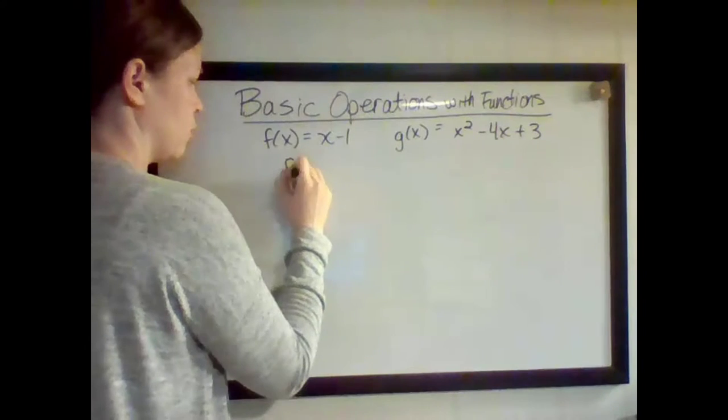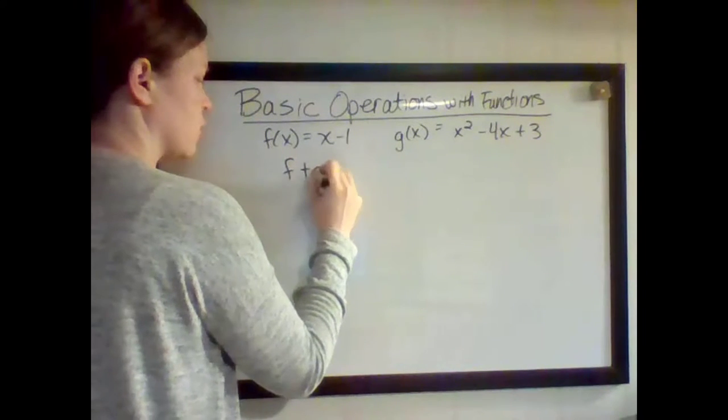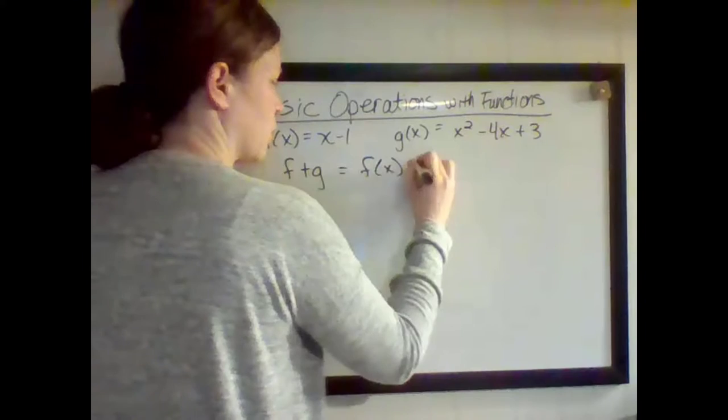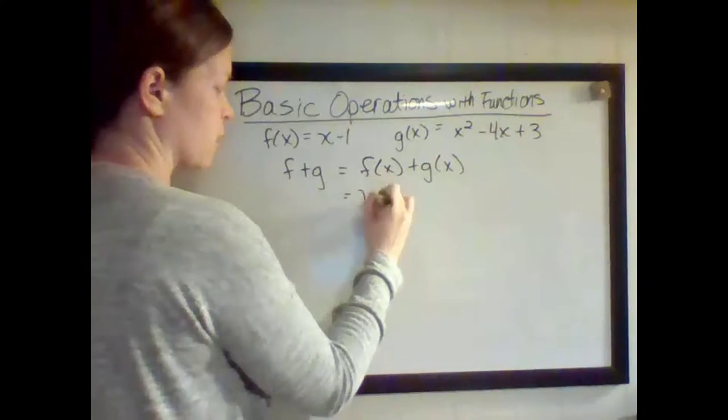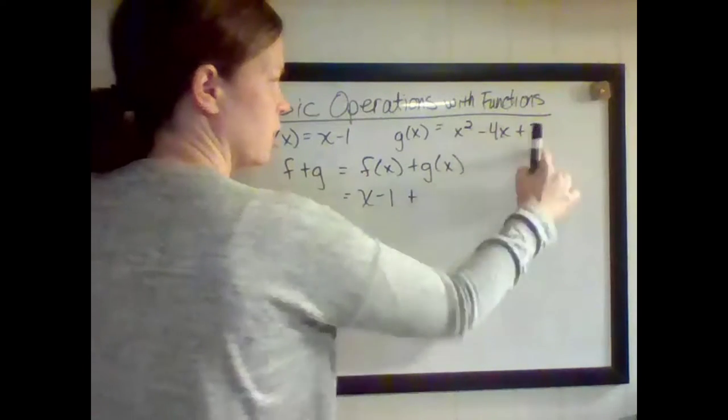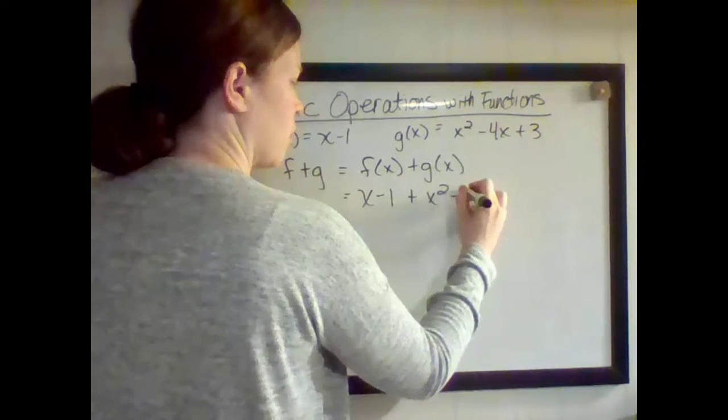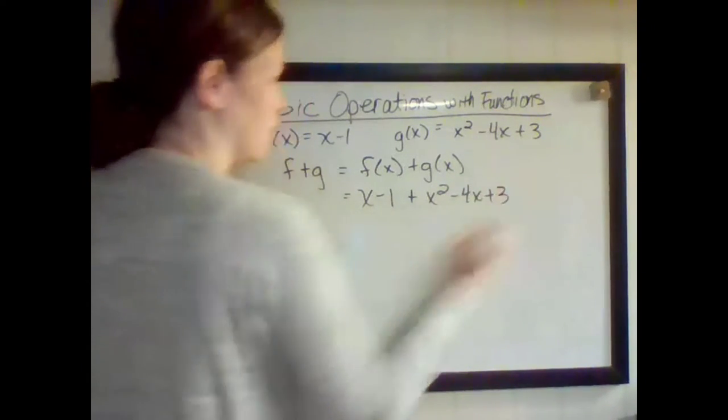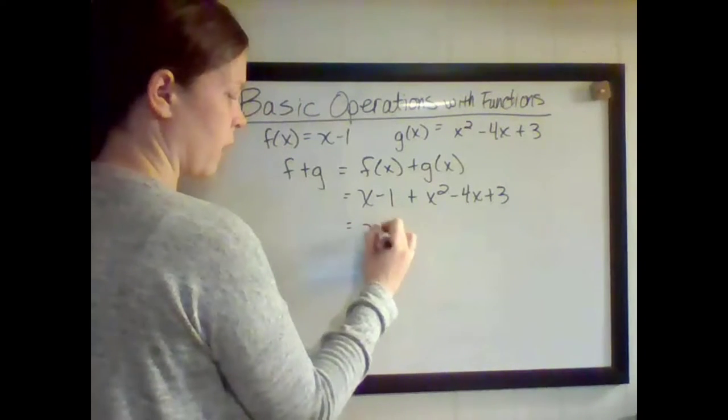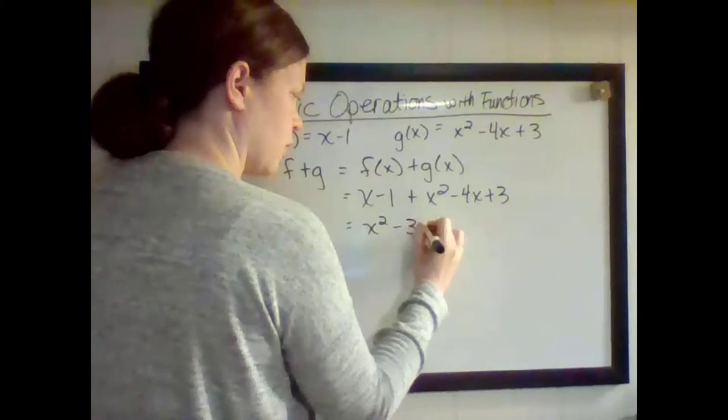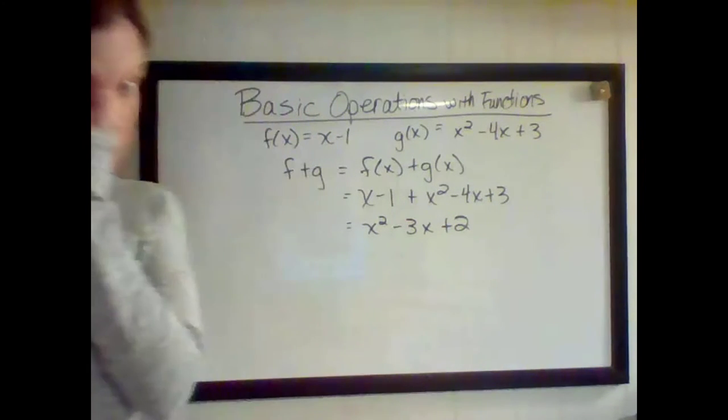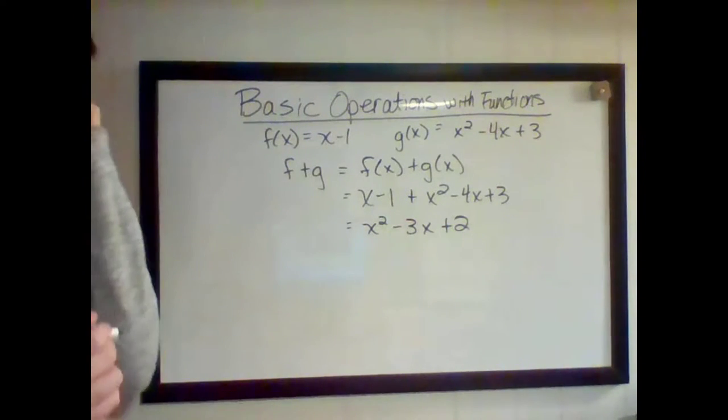Okay, so let's do f+g, or f(x) + g(x). That means I'm going to take f(x), which is x - 1, and add it to g(x), which is x² - 4x + 3. Combining like terms, I get x² - 3x + 2. So that would be f(x) + g(x).